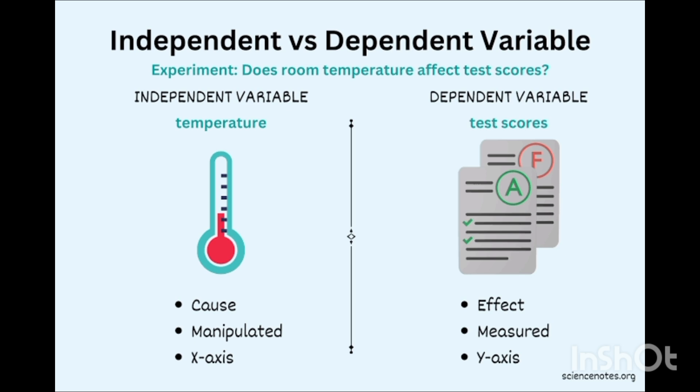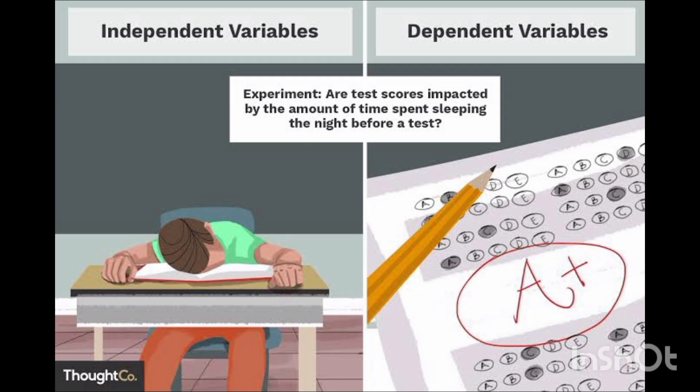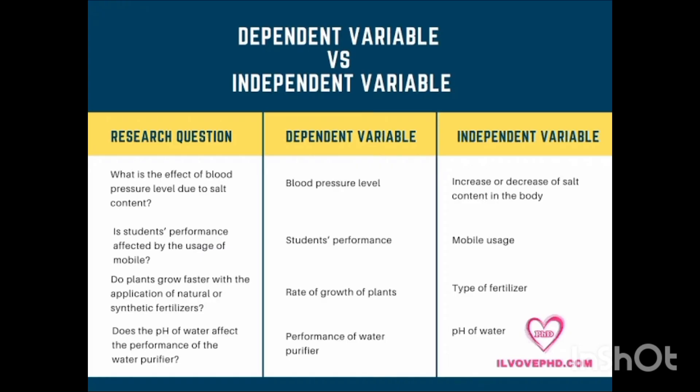Another example: 'Is the test score impacted by the amount of time spent sleeping the night before a test?' The answer is yes — the independent variable is the sleep you get before your exam and the dependent variable is your score, because the mind is fresh.